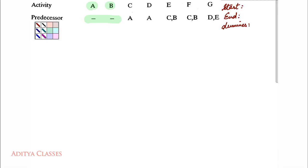A and B. Who will end my network? All those activities who do not feature in this predecessor list. We have A, B, C, D, E. So F and G are not in this list. So they will be ending this network.